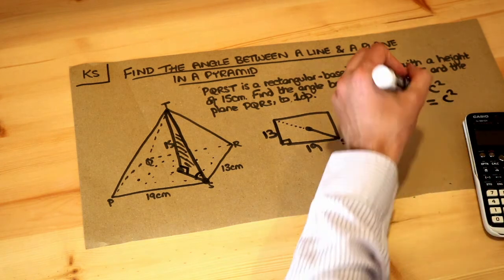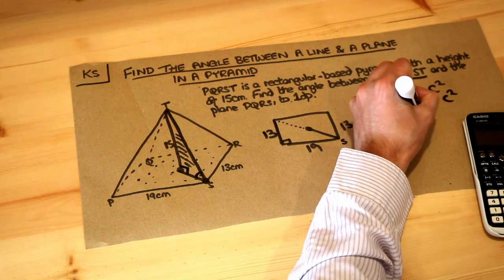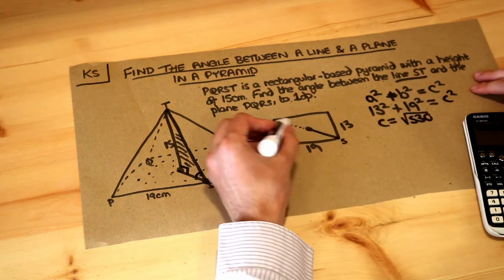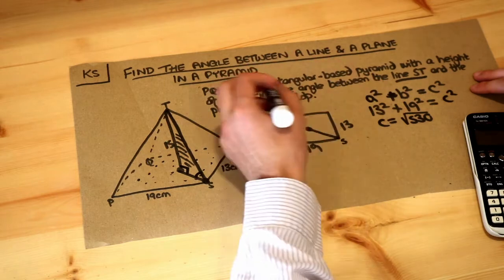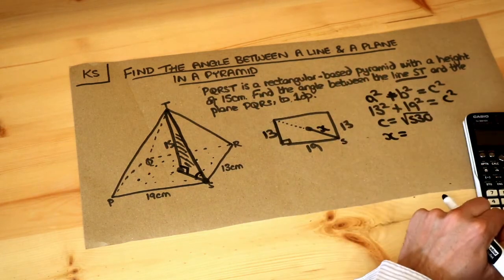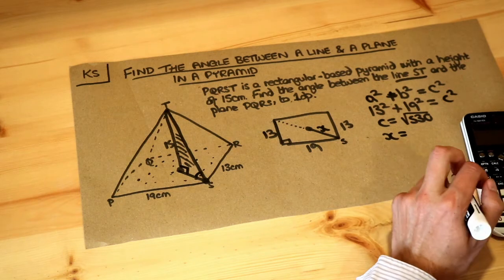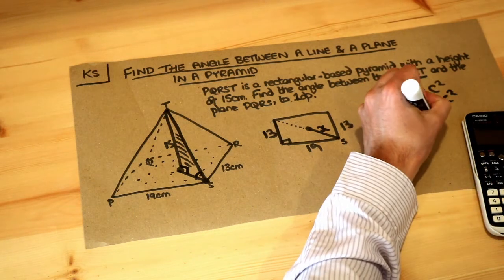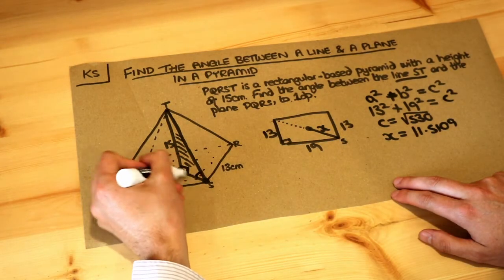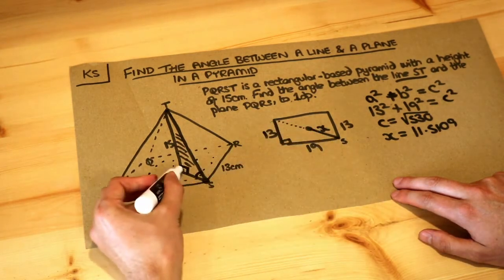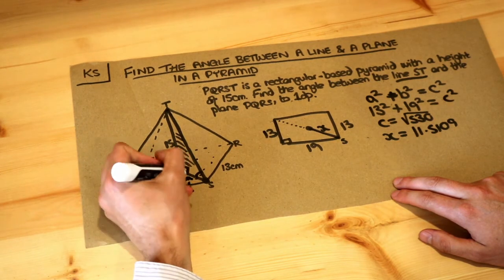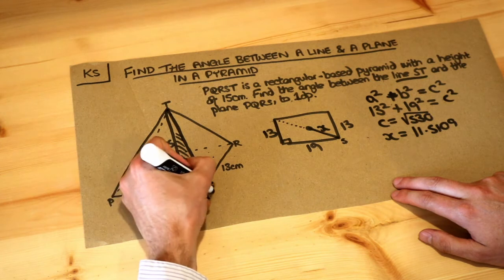And that means this diagonal is going to be half of this total diagonal. So this length here, we call this X. X is going to be half of that, which is going to be 11.5109. So there we go. We've now got the bottom of this triangle, which is half the diagonal of the base. That's going to be 11.5109.